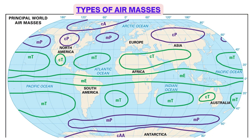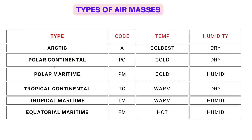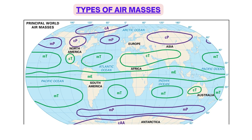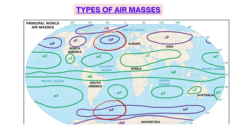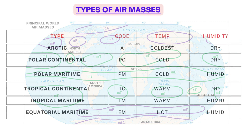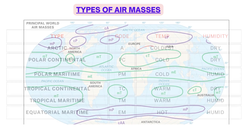Air masses can be classified into six categories. The first is Arctic, which originates over the north and south poles — extremely cold and of low humidity. The second is Polar Continental, originating over subpolar areas over land — cold and with low humidity. The third is Polar Maritime, originating over subpolar areas over sea — cold in temperature but with high humidity due to its origin over the sea surface.